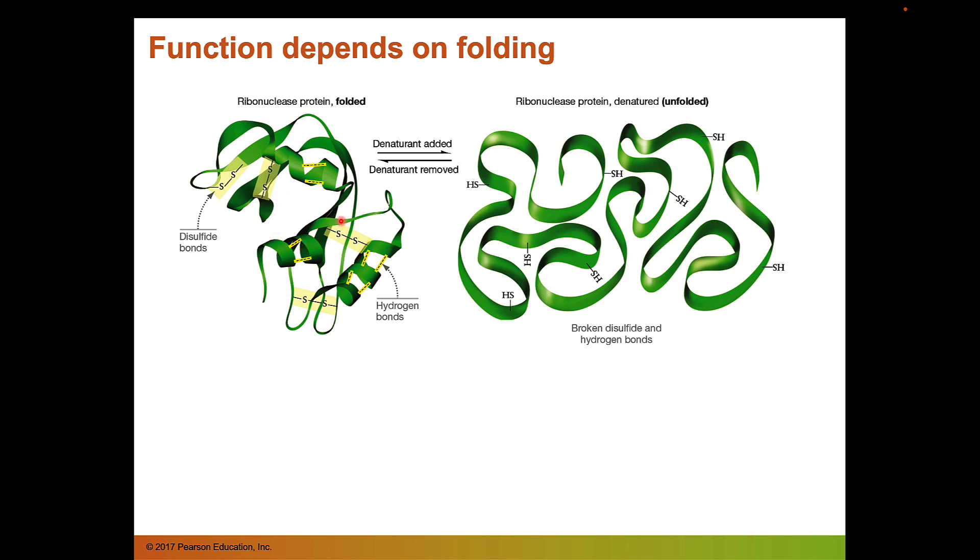And what he did was he showed that when he added this chemical that was able to break apart these disulfide bonds and break apart hydrogen bonds, this protein was unfolded or we call this it being denatured. And when this happened the ribonuclease lost its function. It was no longer able to break apart these RNA molecules into individual monomers. And so this was strong evidence that protein function depends on folding.